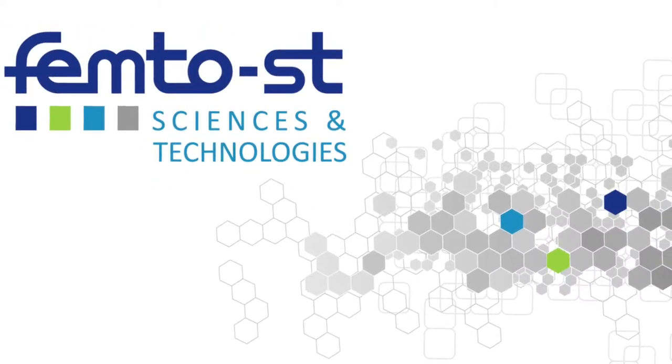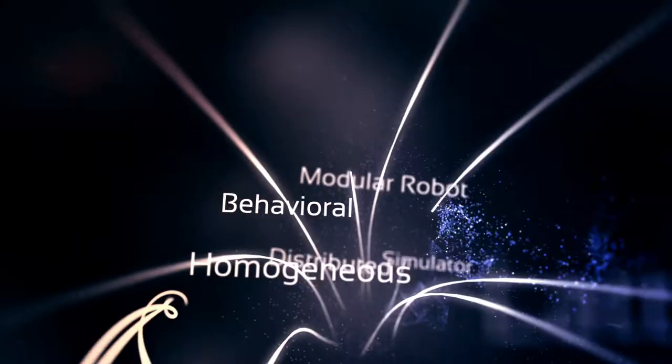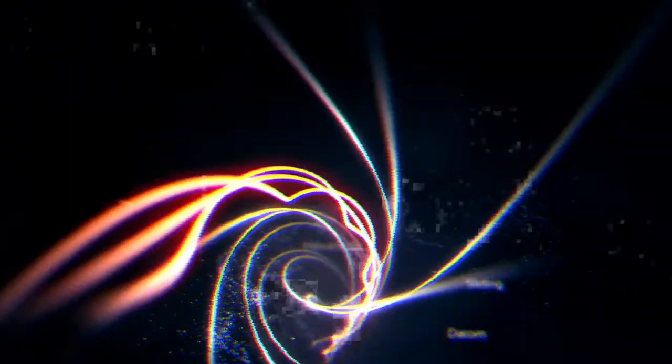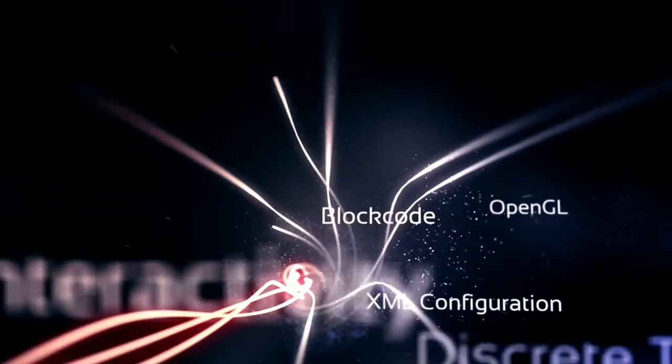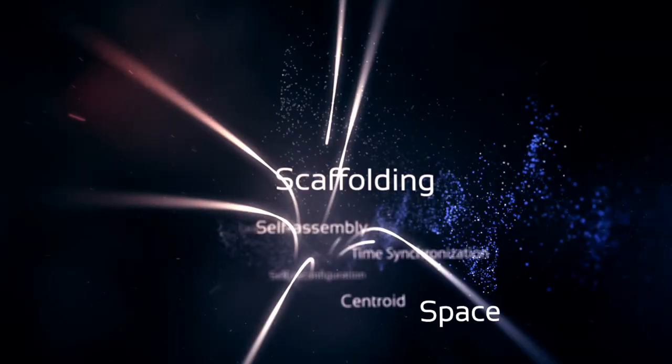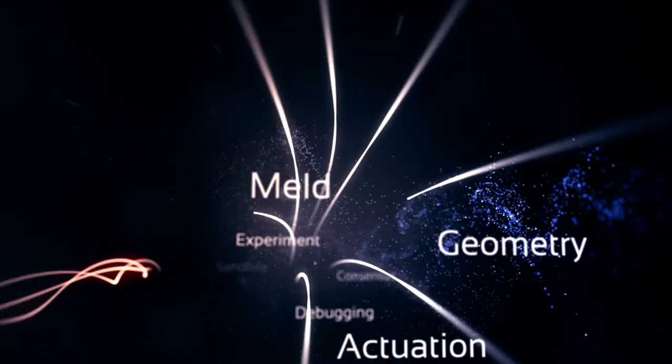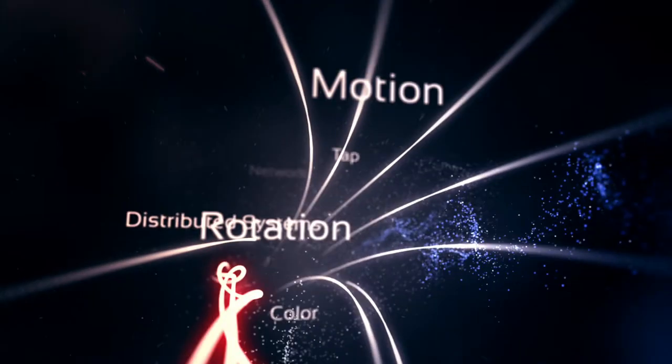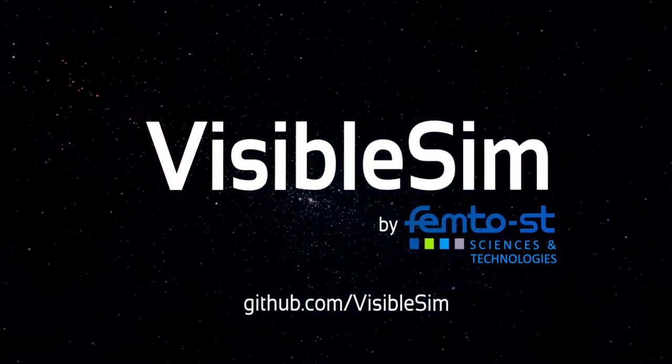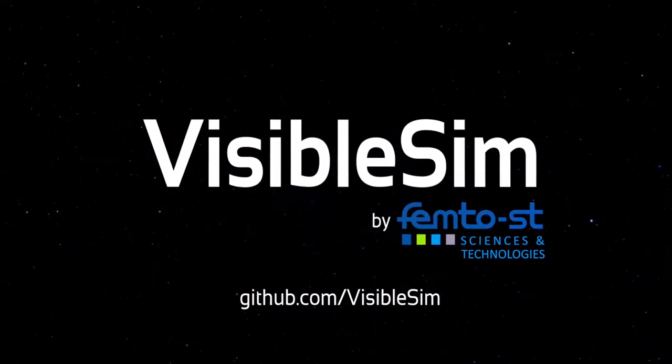VisibleSim is an open-source behavioral simulator for lattice-based modular robots executing distributed algorithms. It is developed by FEMTO-ST Institute. It performs deterministic simulation of systems composed of similar robots in different flavors of 2D or 3D lattices. VisibleSim is used by many roboticists and computer science researchers and is available on GitHub.